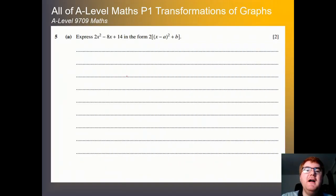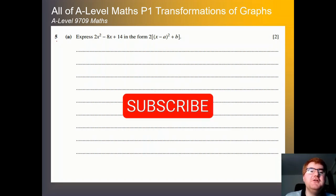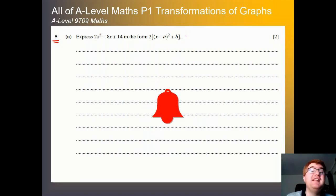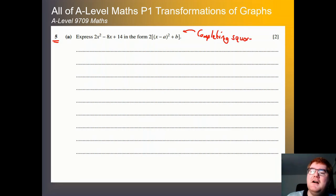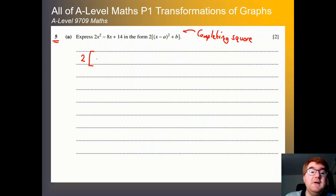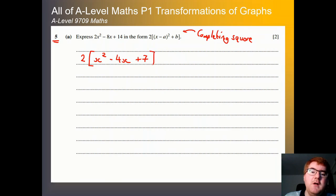On to question 5. They like combining transformations of graphs with other topics. Here we're going to do some quadratics first and then link that to transformations of graphs. The first thing is to express this in completing the square form. We take a factor of 2 out of the quadratic, which gives us 2(x² − 4x + 7). Then we use our completing the square strategy: half of −4 is −2, so we get 2((x − 2)² + 3).